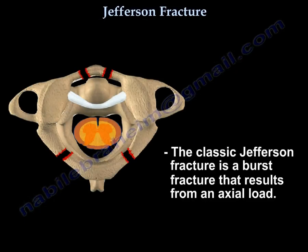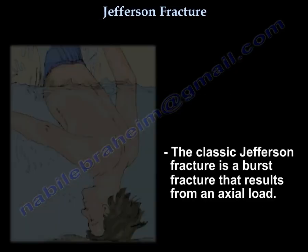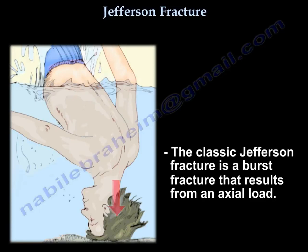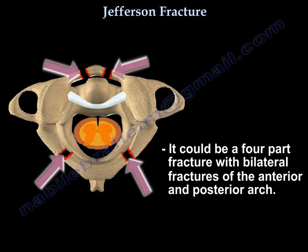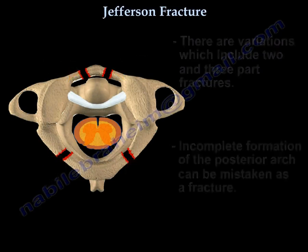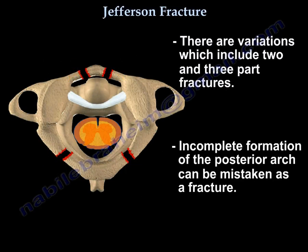The classic Jefferson Fracture is a burst fracture that results from an axial load. It could be a four-part fracture with bilateral fractures of the anterior and posterior arch. There are variations which include two- and three-part fractures. Incomplete formation of the posterior arch can be mistaken as a fracture.